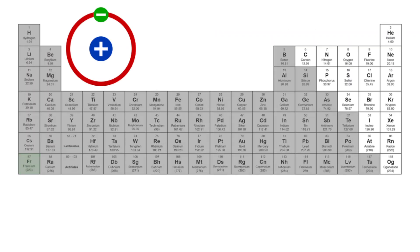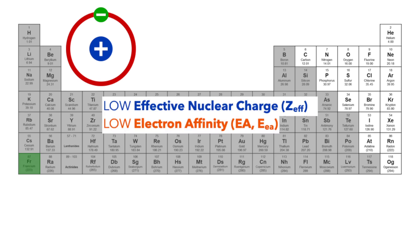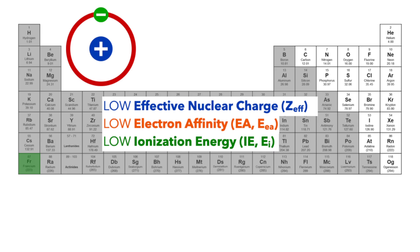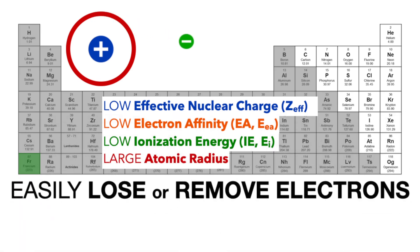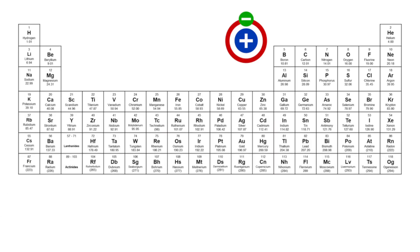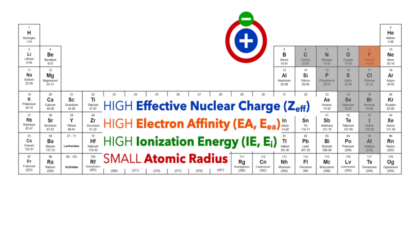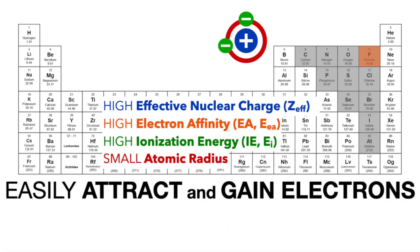Atoms closer to the bottom left corner of the periodic table have low effective nuclear charge, low electron affinity, low ionization energy, and large atomic radii, which means they easily lose their electrons, making them positively charged cations — meaning they're easily oxidized. And atoms closer to the top right corner of the periodic table have high effective nuclear charge, high electron affinity, high ionization energy, and small atomic radii, which means they easily attract and gain electrons, making them negatively charged anions — meaning they're easily reduced.